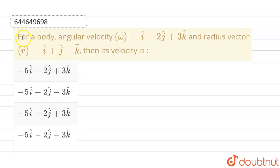Hello everyone. If we talk about this question, for a body, angular velocity omega vector is given as i cap minus 2 j cap plus 3 k cap, and the radius vector is given as i cap plus j cap plus k cap. Then we have to find out its velocity, and these are the given options.